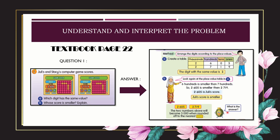Look at the box here. The two numbers above will both become 3,000 when rounded off to the nearest thousand. When 2,605 is rounded to the nearest thousand, the answer is 3,000. Similarly, 2,790 rounded off to the nearest thousand also gives 3,000.